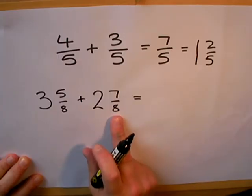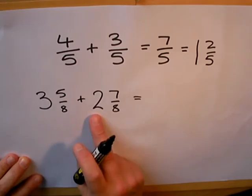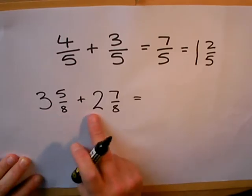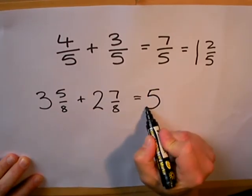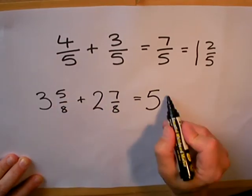So all we have to do is add together the top numbers and add together the whole numbers. Three wholes and two wholes make five whole ones, and five eighths and seven eighths make twelve eighths.